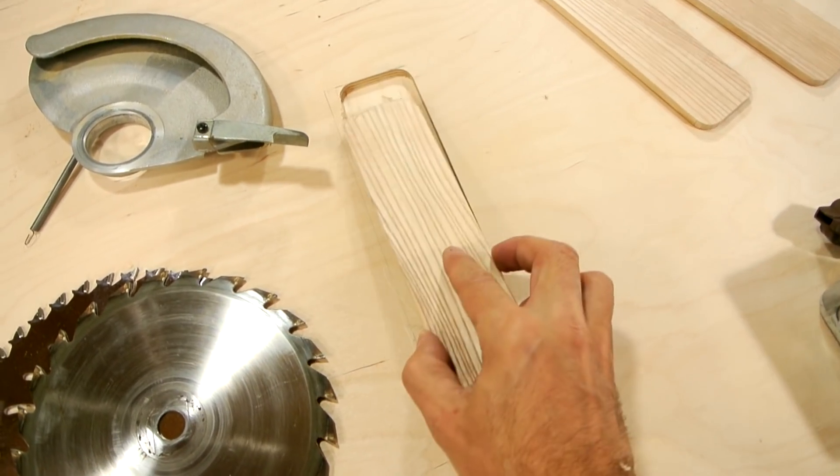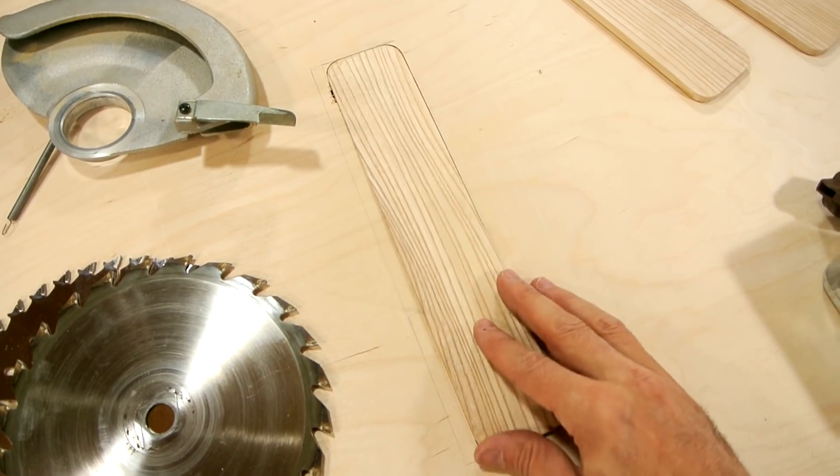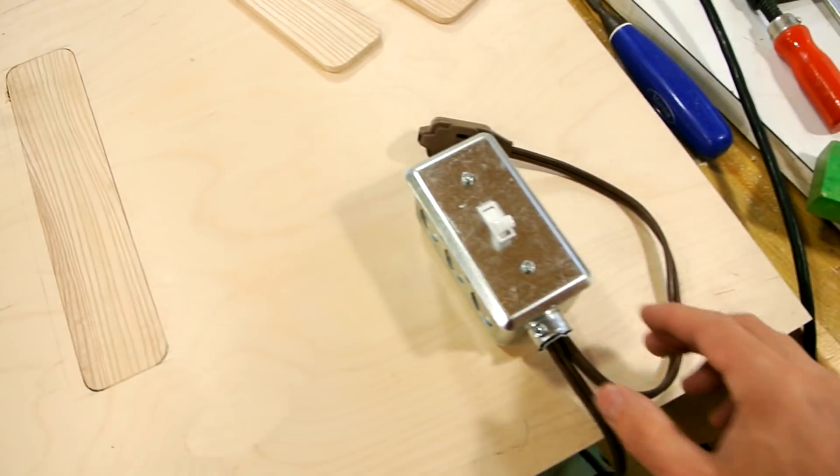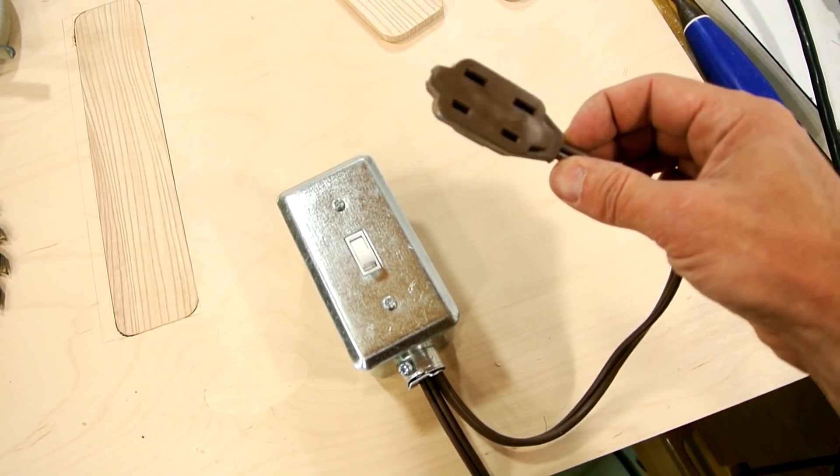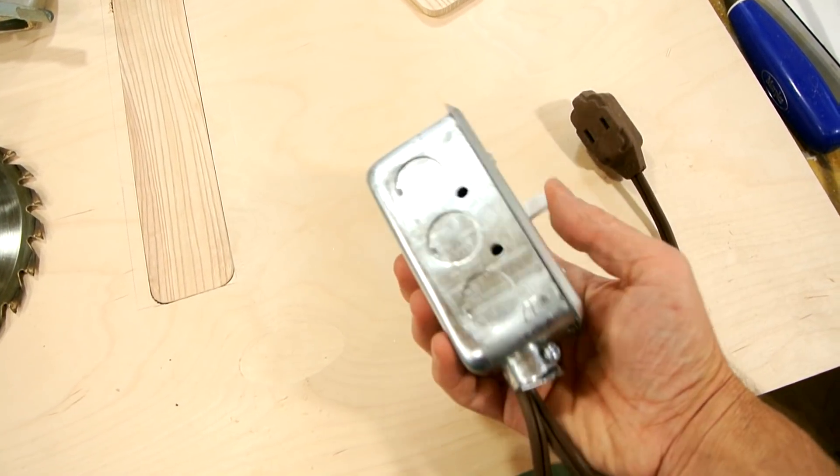So I just made a whole bunch of inserts to go into the slot here. I also made an on-off switch by basically just installing a switch on an inexpensive extension cord, so I can turn the saw on and off with this.